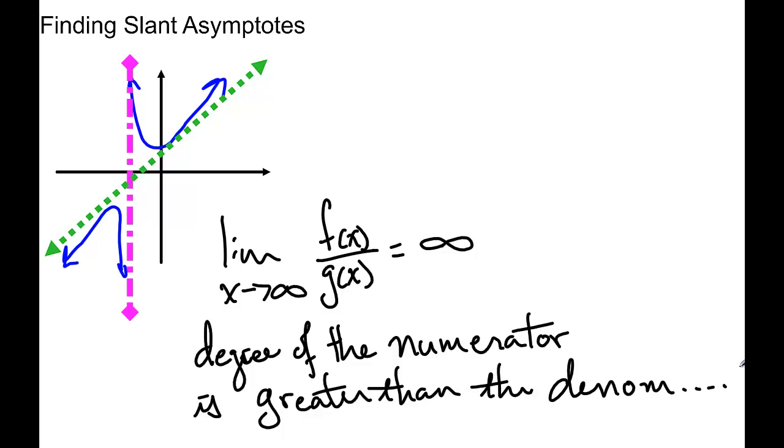So slant asymptotes occur when the degree of the numerator is greater than the degree of the denominator. That's how you can tell, otherwise you'll have a horizontal asymptote. So how do we find them? Well that's a good question, let's take a look.